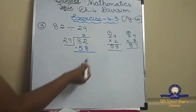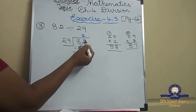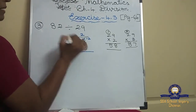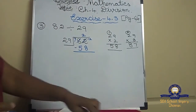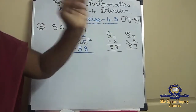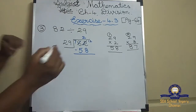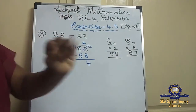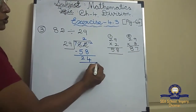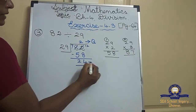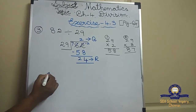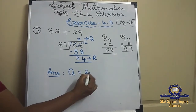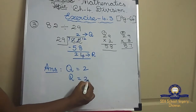Now subtract 82 minus 58. Can you count after 8 up to 2? No, so borrow: 2 becomes 12 and 8 becomes 7. After 8, count up to 12: 9, 10, 11, 12 — that's 4. After 5, count up to 7: 6, 7 — that's 2. So the remainder is 24 and the quotient is 2.